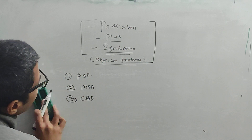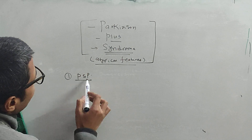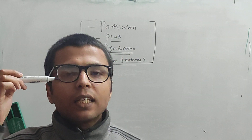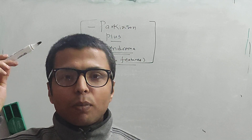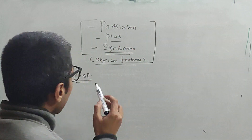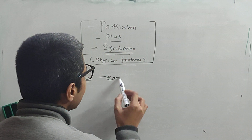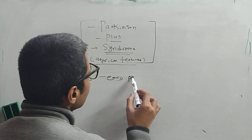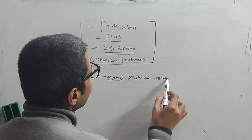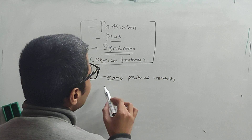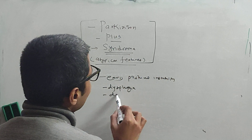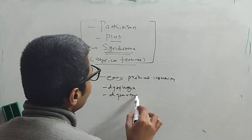Let's begin with the first disease called Progressive Supranuclear Palsy. As the name implies, there is restricted vertical eye movement and saccades. In addition to that ocular feature, there is early postural instability. There can also be dysphagia and dysarthria.